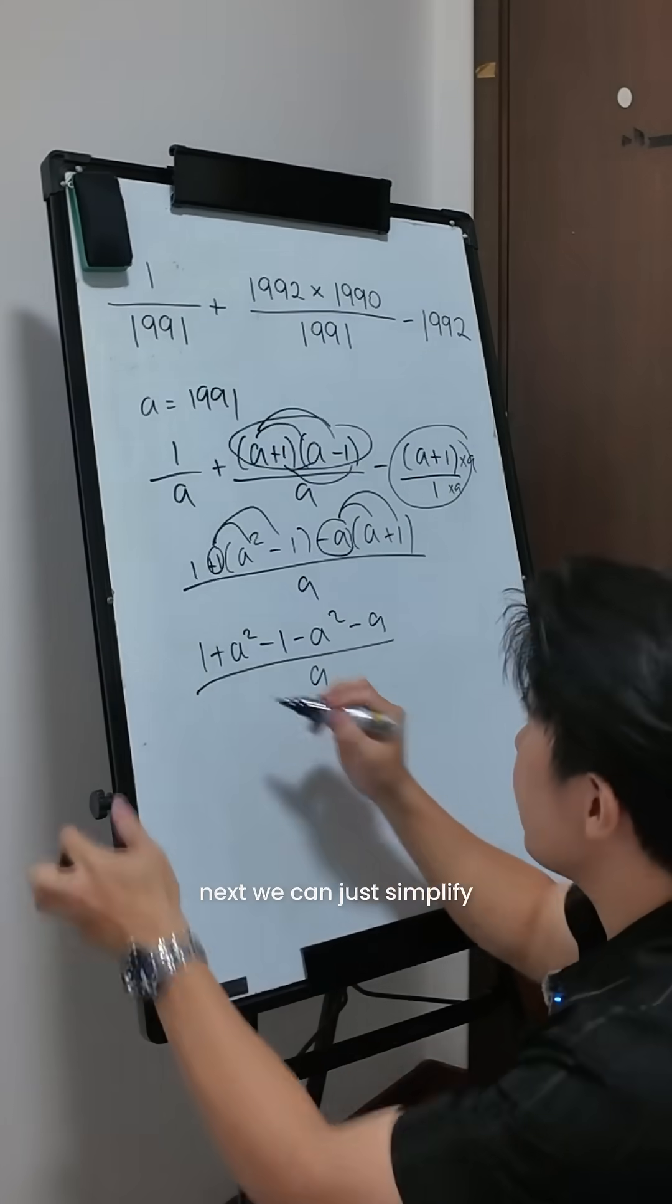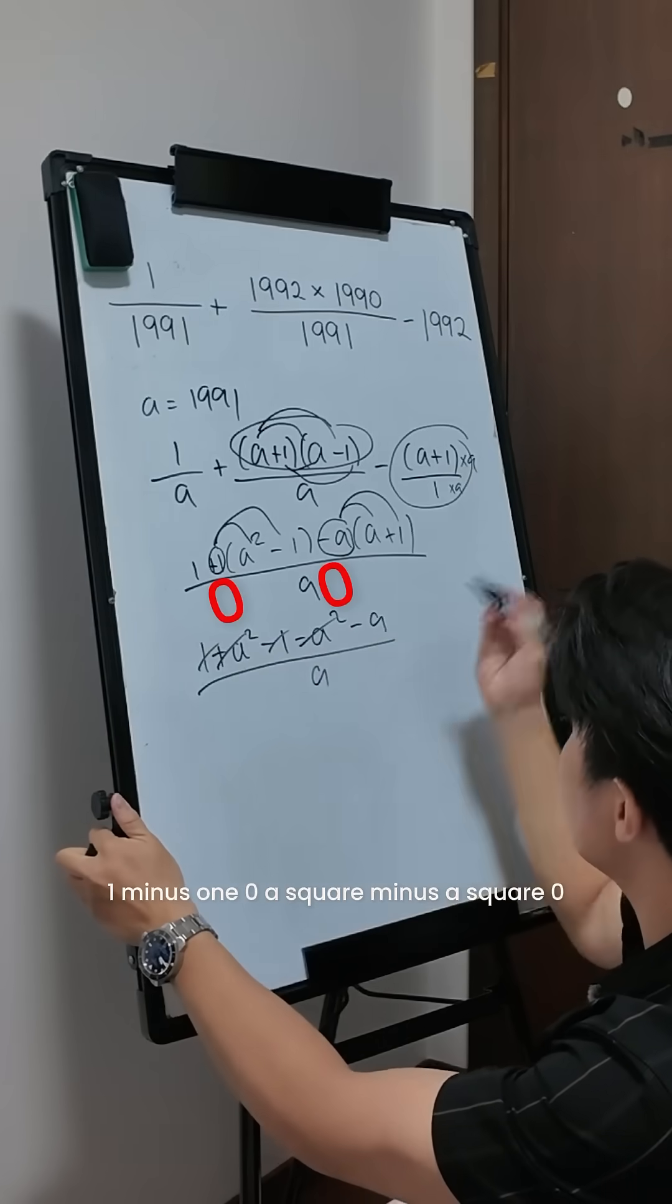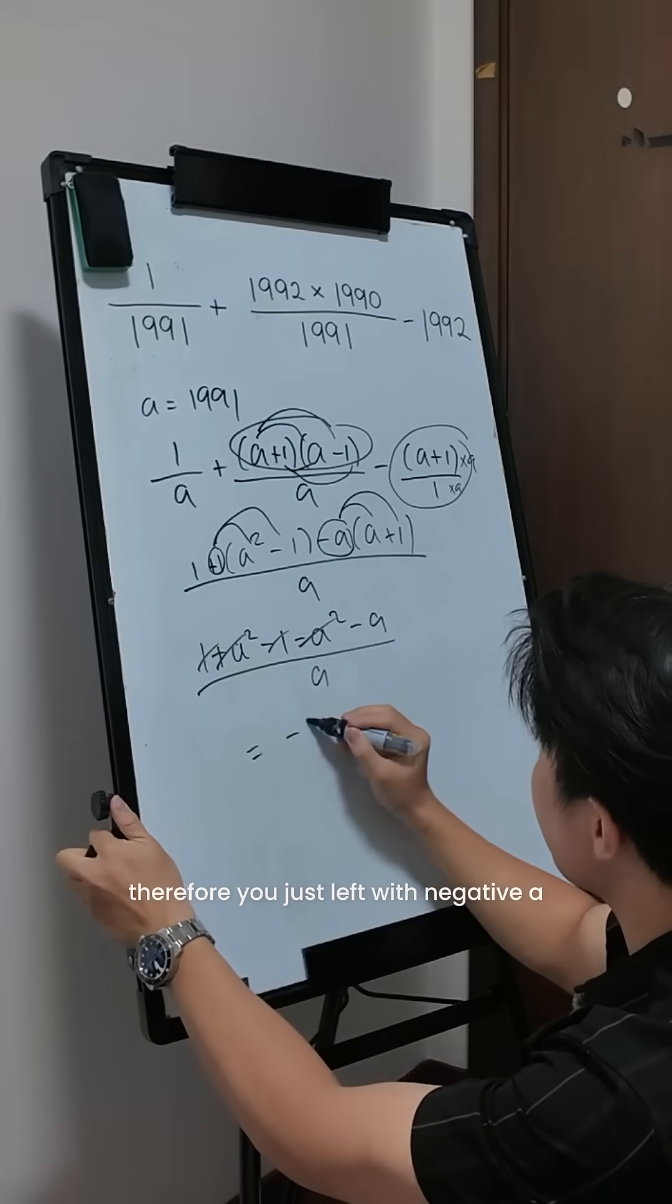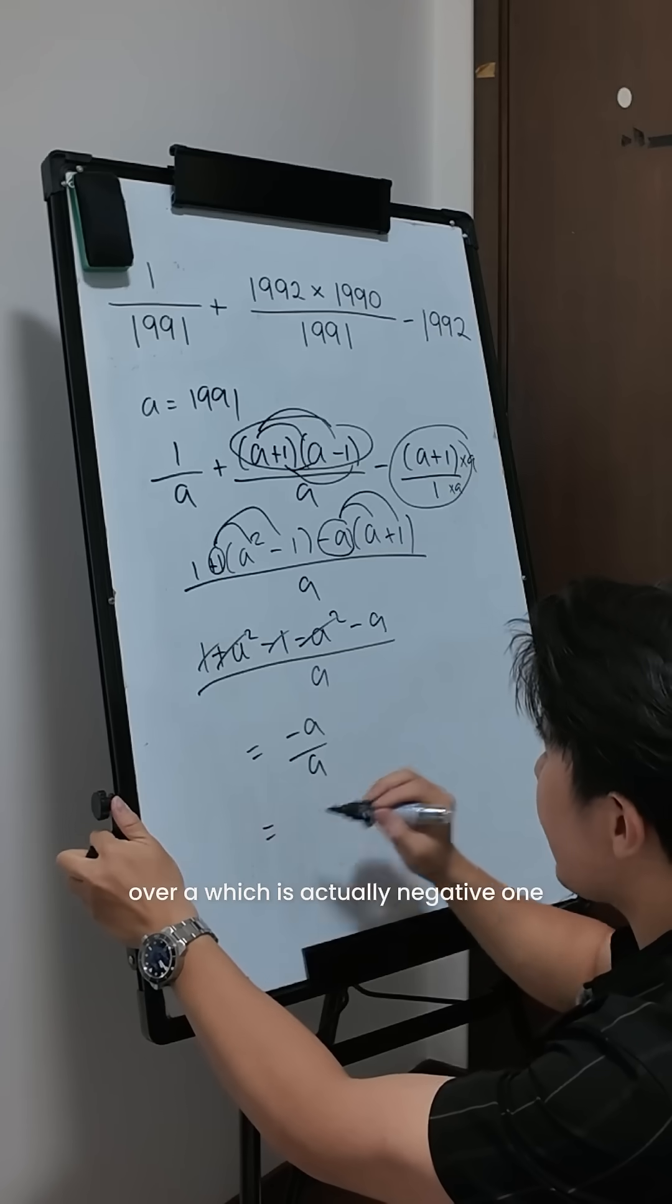Next, we can just simplify. 1 minus 1, 0. A squared minus a squared, 0. Therefore, you're just left with negative a over a, which is actually negative 1.